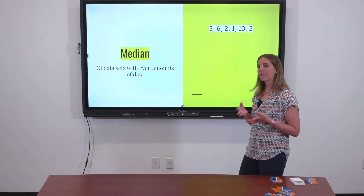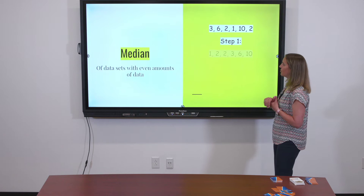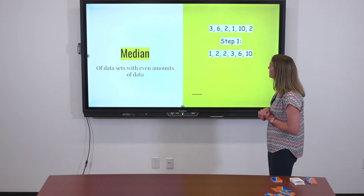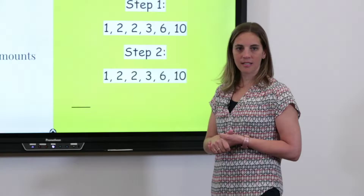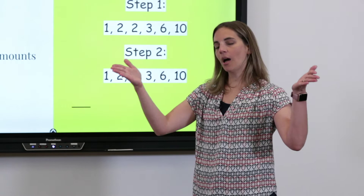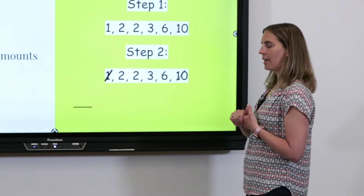So let's figure out how to fix that problem. The first step is always going to be the same — take those numbers and put them in order from least to greatest. Go ahead and do that on your paper. Step two starts the same way too — start on the outside and come to the middle until you get to your middle two numbers. We're going to cross off our one and our ten, and then our two and our six.